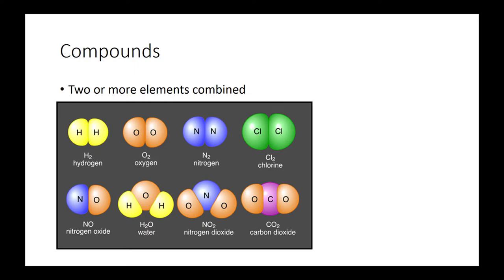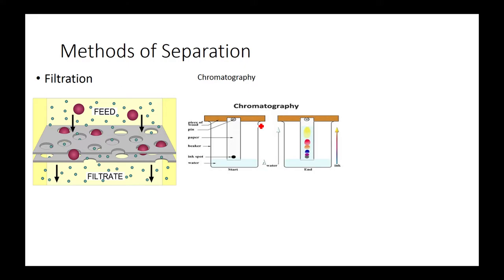Compounds are two or more elements combined. I'm not going to go through this list here. And if there's two like that, it's called diatomic. It's known as diatomic.